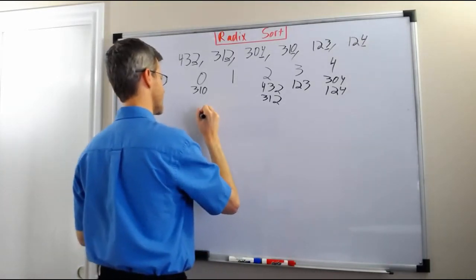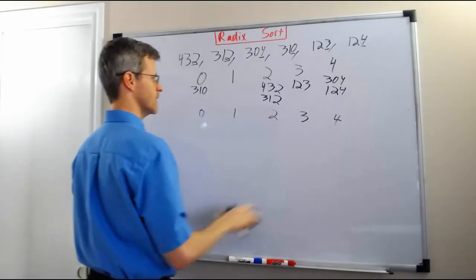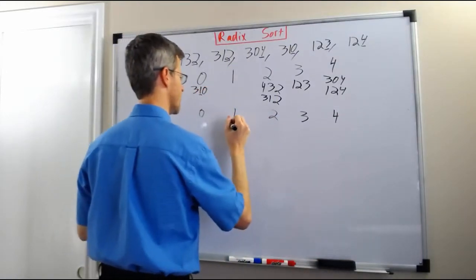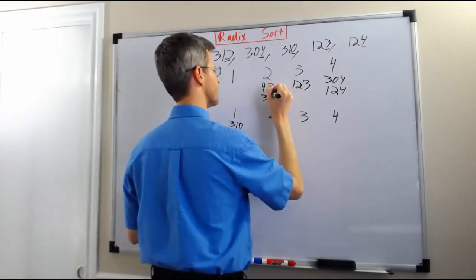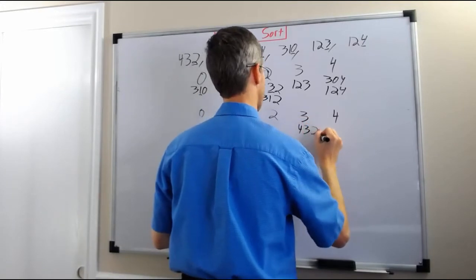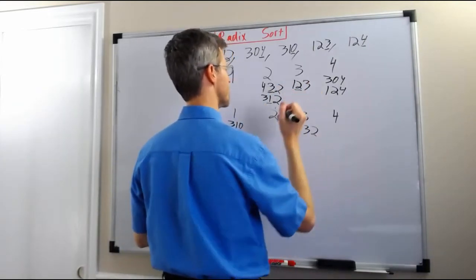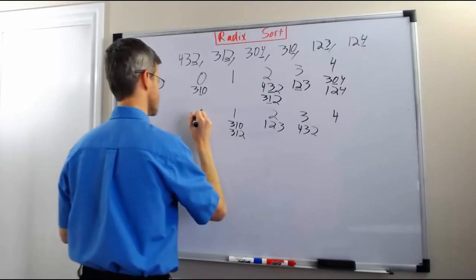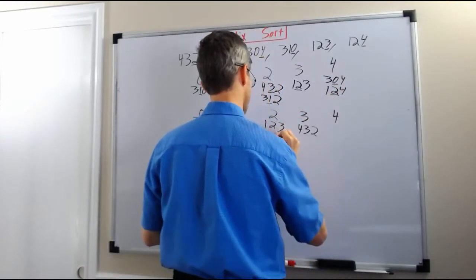Now we're going to make another set of bins and sort by the middle digit. For 310, the middle digit is 1, so we put it in the 1 bin. From the 2 bin, 432 has a middle digit of 3, so it goes in the 3 bin. 312 has a middle digit of 1, so it goes in the 1 bin. 123 has a middle digit of 2, so it goes in the 2 bin. 304 has a middle digit of 0, so it goes in the 0 bin. And 124 has a middle digit of 2, so it goes in the 2 bin.